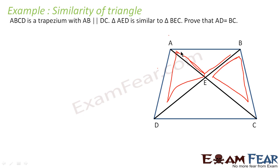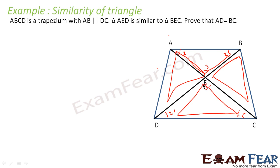Also, we know that since it is a trapezium, certain angles will be equal. Let's label them: angle 1 equals angle 1', angle 2 equals angle 2', and angle 3 equals angle 3'. We know angle 1 equals angle 1' by alternate angles, angle 2 equals angle 2' by cross-pointing (corresponding) angles, and angle 3 equals angle 3' by vertically opposite angles.